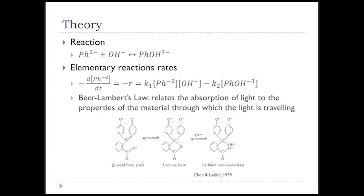As background on the reaction: phenolphthalein goes to Ph2⁻ in an irreversible manner very fast. The second reaction is Ph2⁻ plus hydroxide, reversibly going to Ph3⁻. If we write the reaction rate — the rate of disappearance of Ph2⁻ — it equals the forward rate minus the reverse rate. Since OH⁻ is at a much higher concentration than Ph2⁻, it can be assumed constant and lumped into K1. So you have a forward reaction rate K1 times Ph2⁻, minus K2 times Ph3⁻.